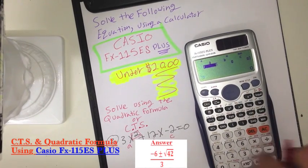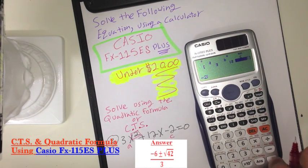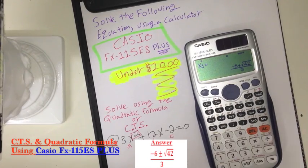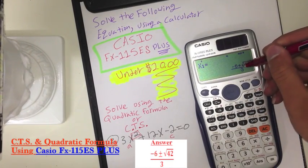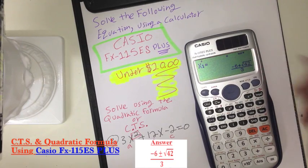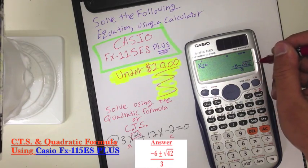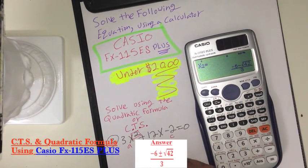Our A is 3. Our B is 12. And our C is negative 2. Push equal. So right here negative 6 plus square root of 42 all over 3. And the second part of it is negative 6 minus square root of 42 all over 3. And this is our answer.